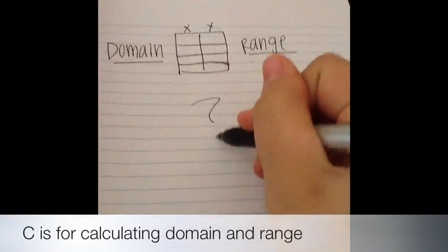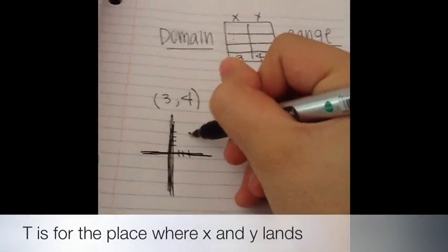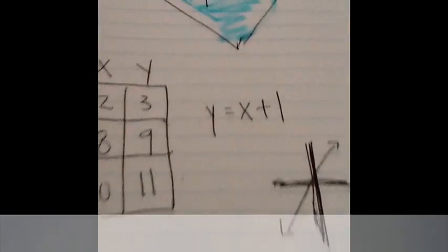C is for calculating domain and range, T is for where X and Y lands, I is for interpreting the rule down in the function world.